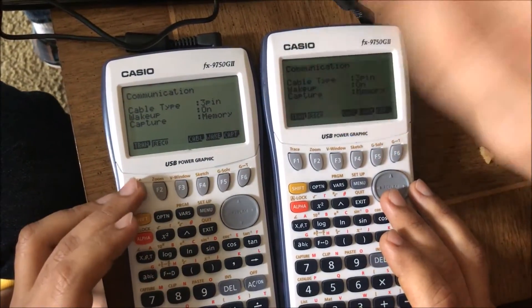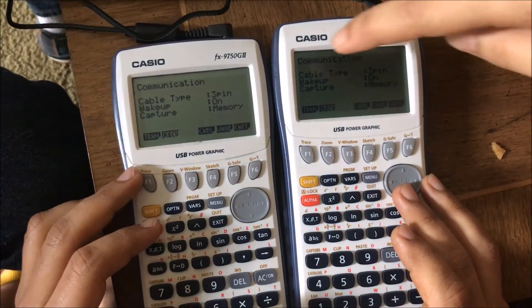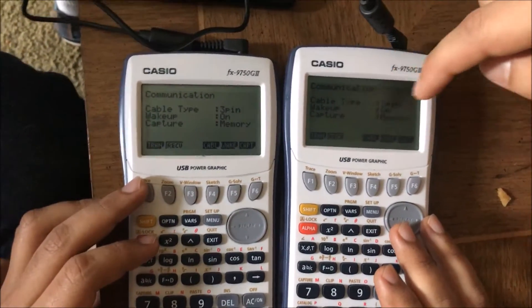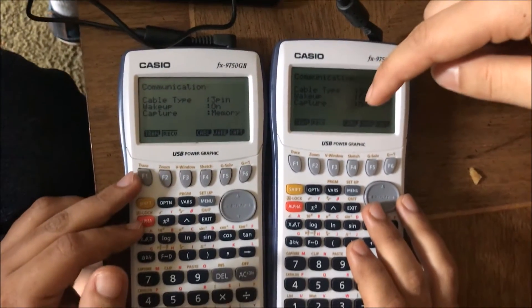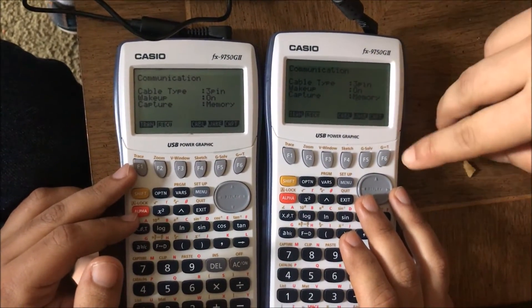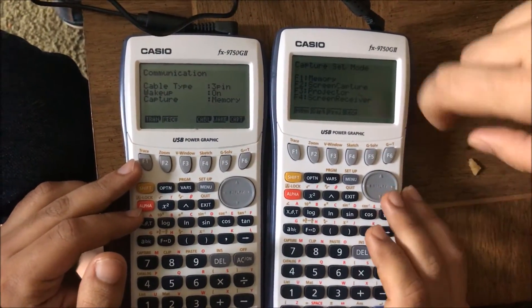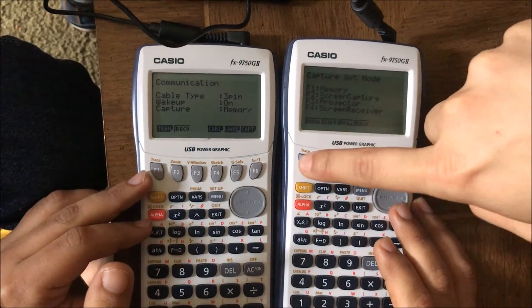So do that on the same calculator. And then here there is cable type and there is wake up and there is capture unit. Press F6 and then you need to set like for memory F1.